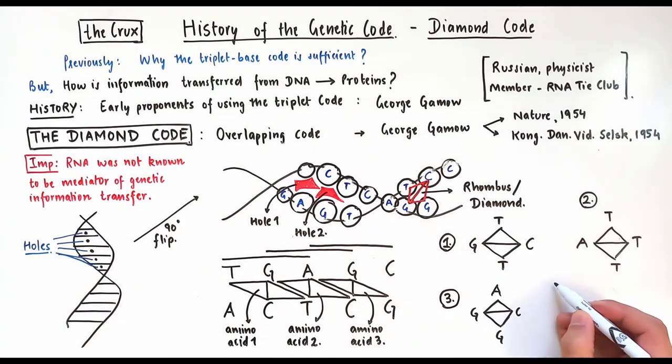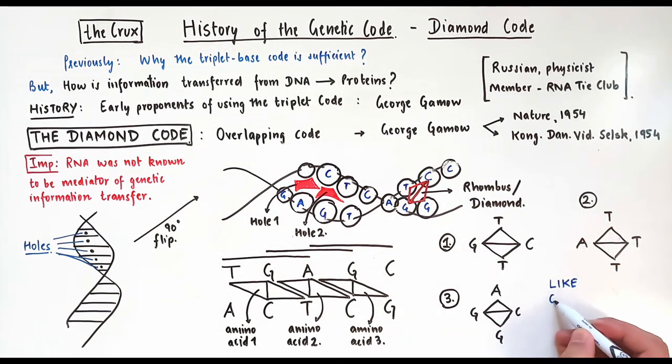In the next video, we will learn more about the diamond code, and discuss how the 64 codons specify 20 amino acids.